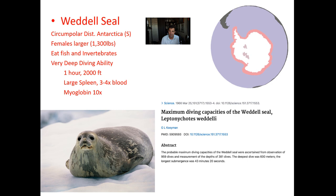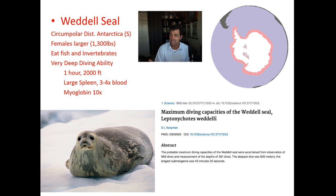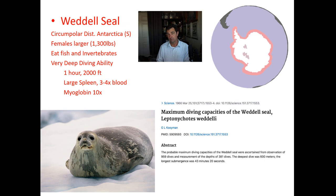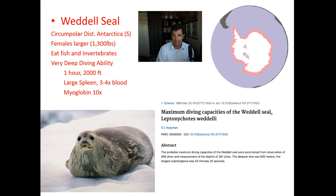Walruses have a circumpolar Arctic distribution, meaning they're distributed throughout the north, with two large populations. The Weddell seal has a circumpolar distribution around Antarctica — the southern hemisphere, totally the opposite place in the world. In the Weddell seal, females are actually larger than males, weighing up to 1,300 pounds. They eat fish and invertebrates and are very well studied because of their incredible ability to dive very deep, making their diving physiology of great interest to researchers.